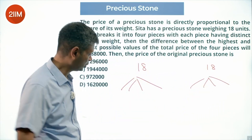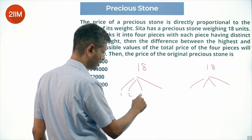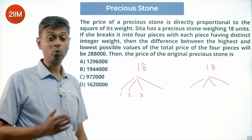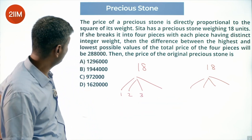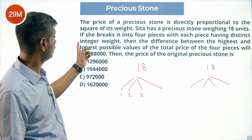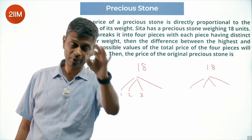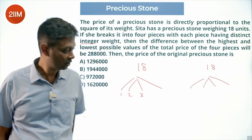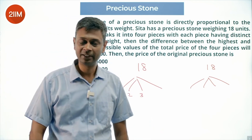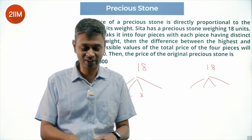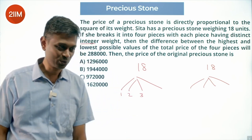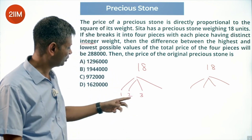Initially I put 1, 1, 1 because I didn't see the 'distinct integer weight' condition. To not make that mistake in the exam, I reminded myself. Solving for fun, I made that mistake — so be careful. The correct small pieces are 1, 2, 3.